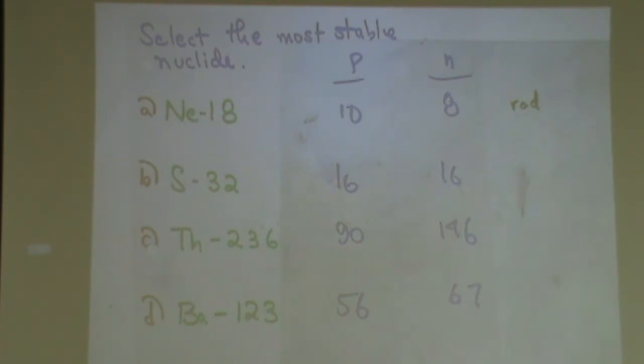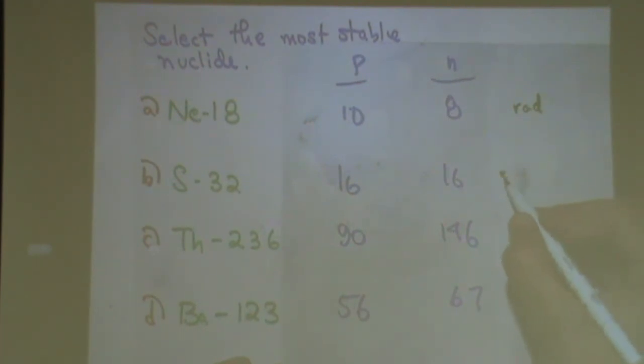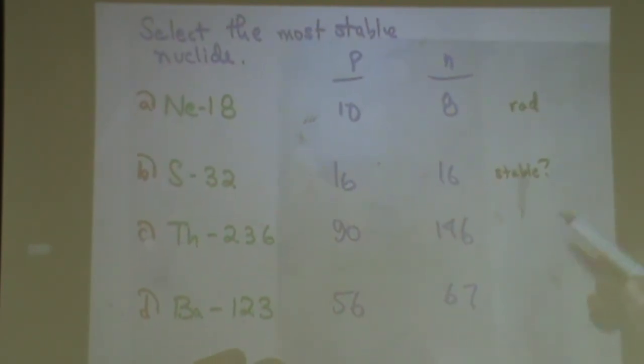Sulfur. Sulfur has one thing going for it that it doesn't match the periodic table. It does have two even numbers. So we'll see. We're trying to find the most stable. I'm just going to make a question mark here. Unsure, but seems nice. Let's double check the other ones, though.